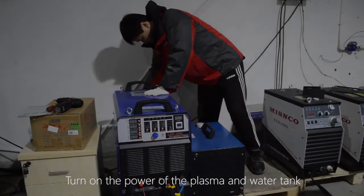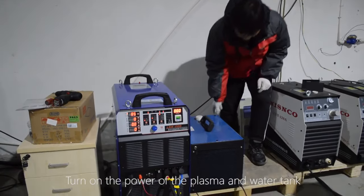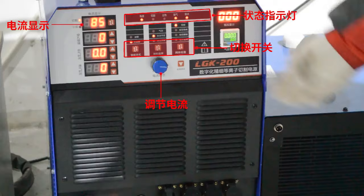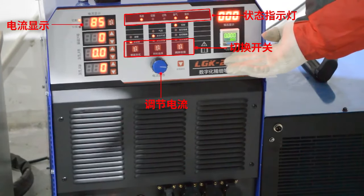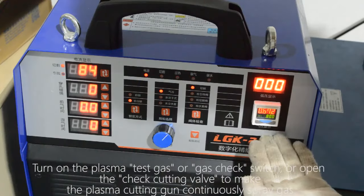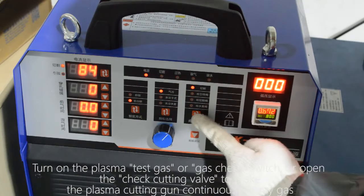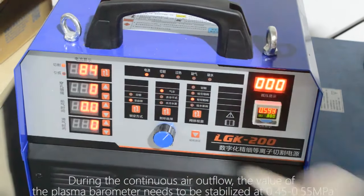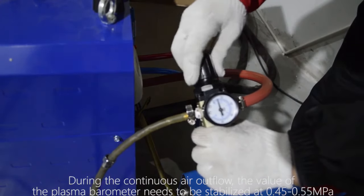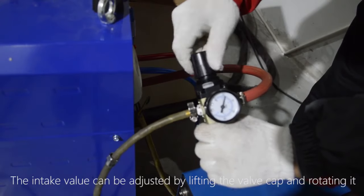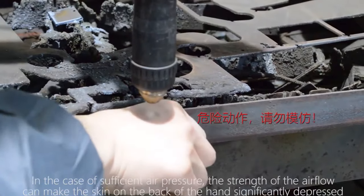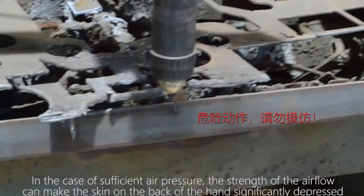Turn on the power of the plasma and water tank. Turn on the plasma test gas or gas check switch or open the check cutting valve to make the plasma cutting gun continuously. During the continuous air outflow, the value of the plasma barometer needs to be stabilized at 0.45 to 0.55 MP. The intake value can be adjusted by lifting the valve cap. In the case of sufficient air pressure, the strength of the airflow can make the skin on the back of the hand significantly depressed.